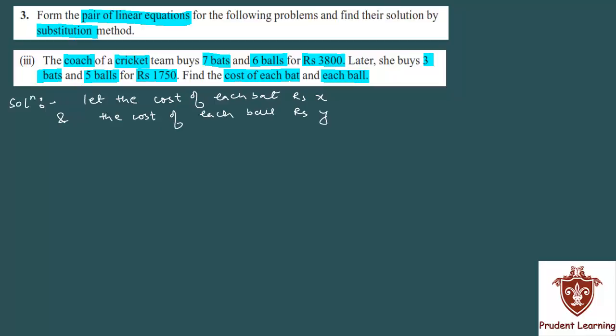Now, what condition is given? First of all, she bought 7 bats and 6 balls and paid 3800 rupees. So how do you transform this equation? 7 times the cost of each bat, which is 7x, plus 6 times the cost of each ball, which is 6y, is equal to the total sum which is 3800. This is your equation.